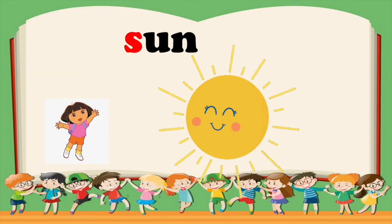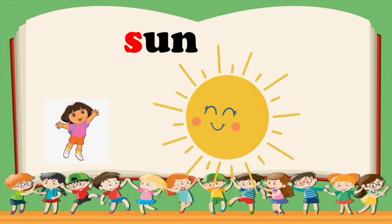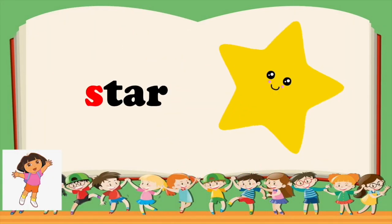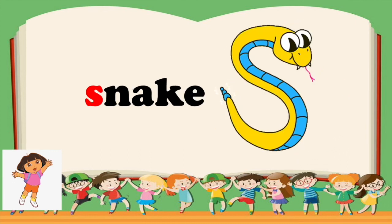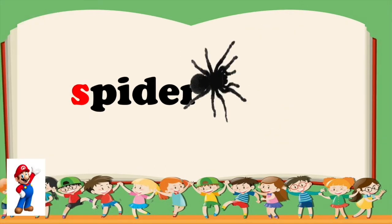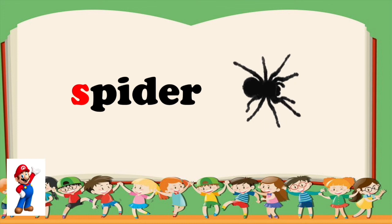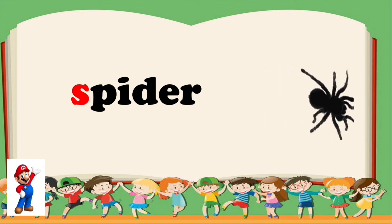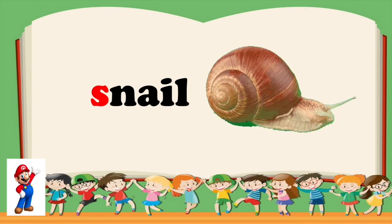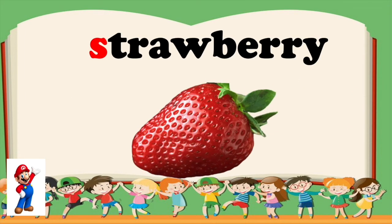S — sun, sun. S — star, star. Next is S — snake, snake. S — spider, spider. S — snail, snail. And let's go to the last word: S — strawberry, strawberry.